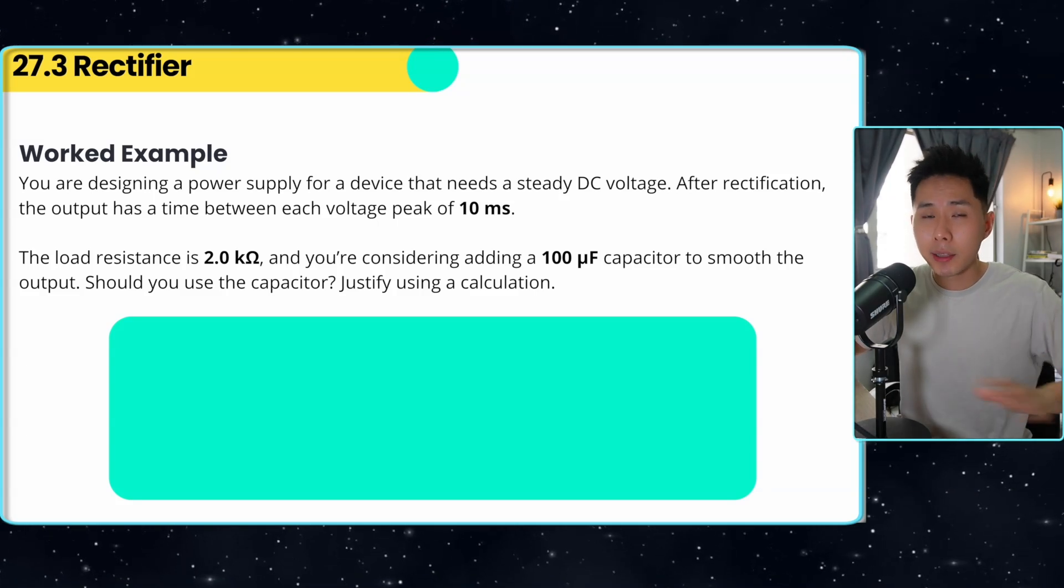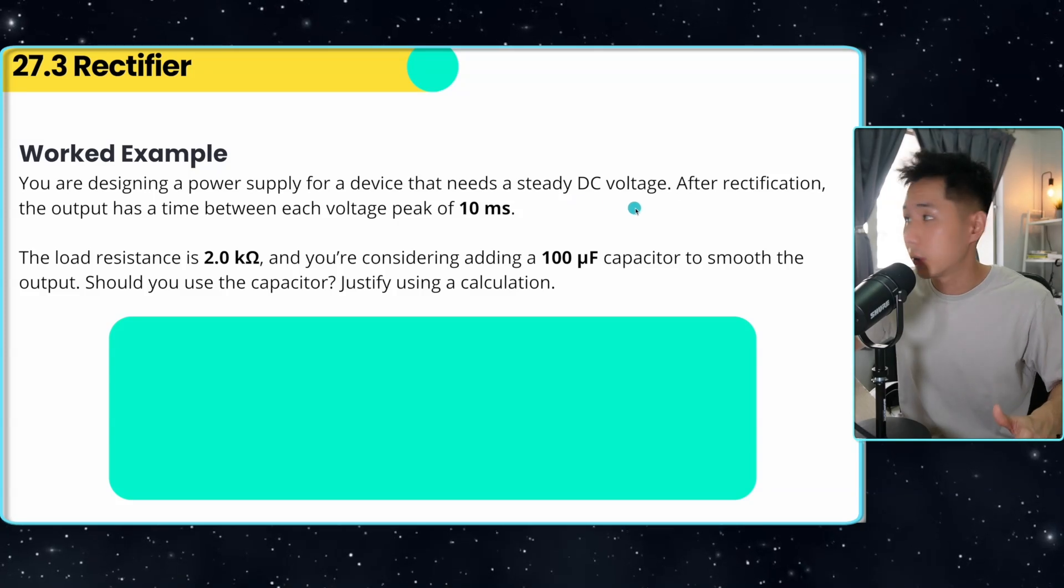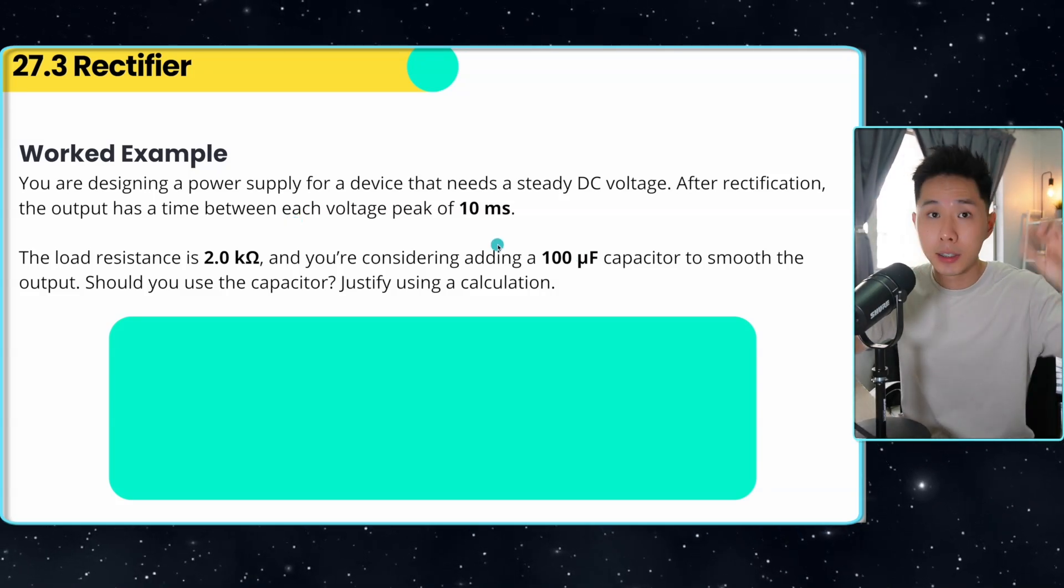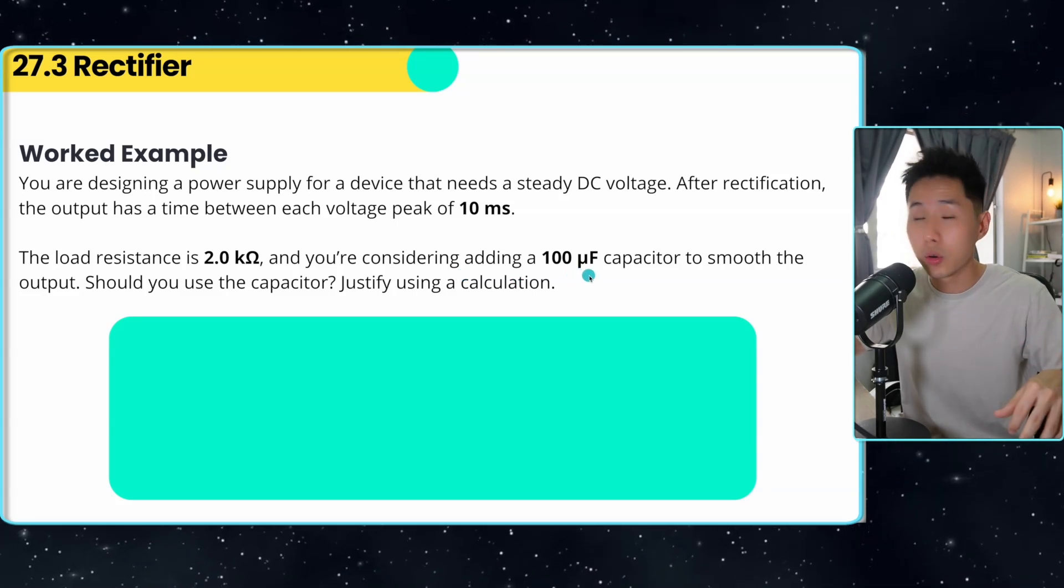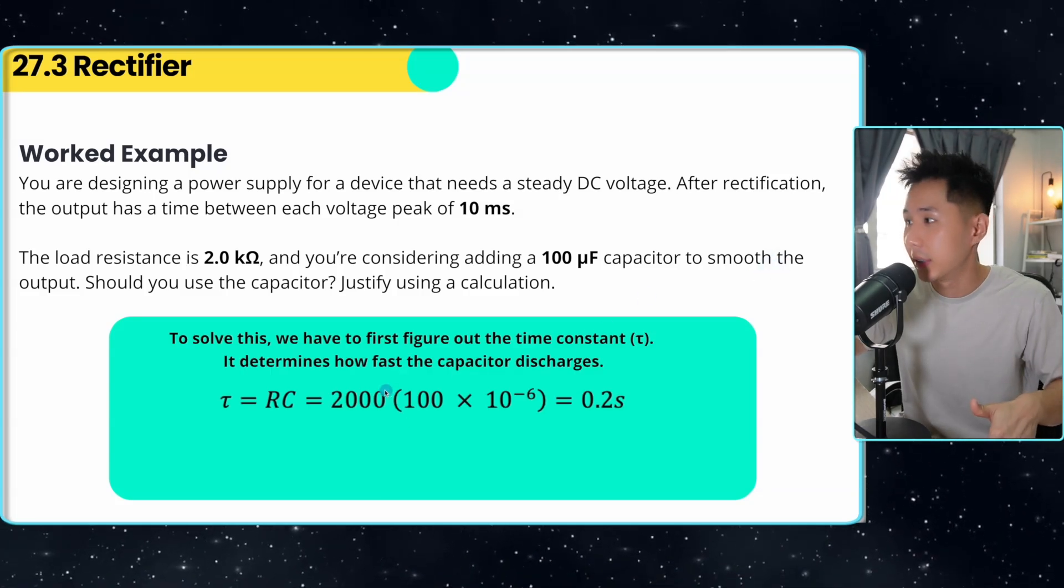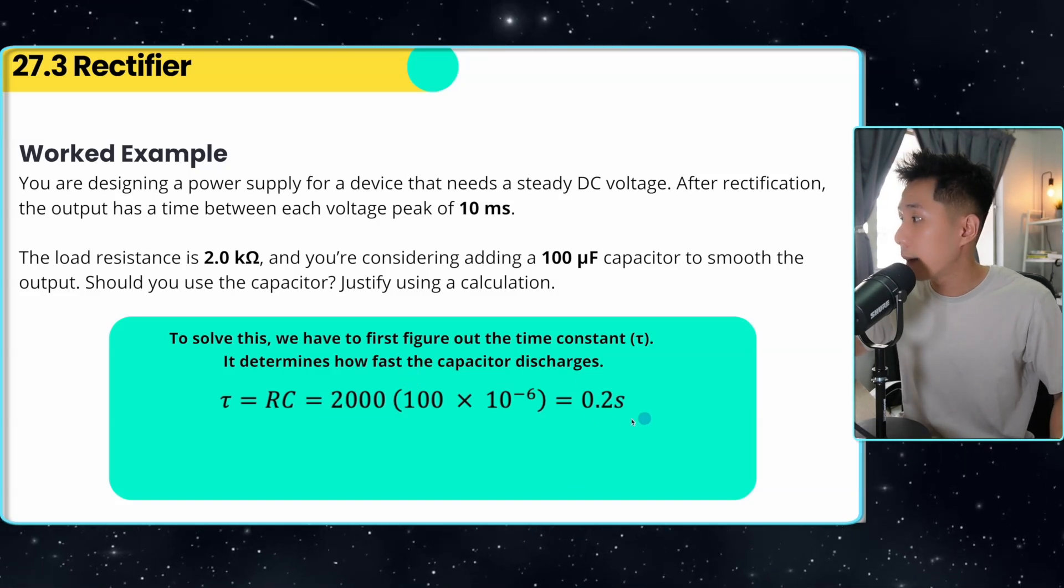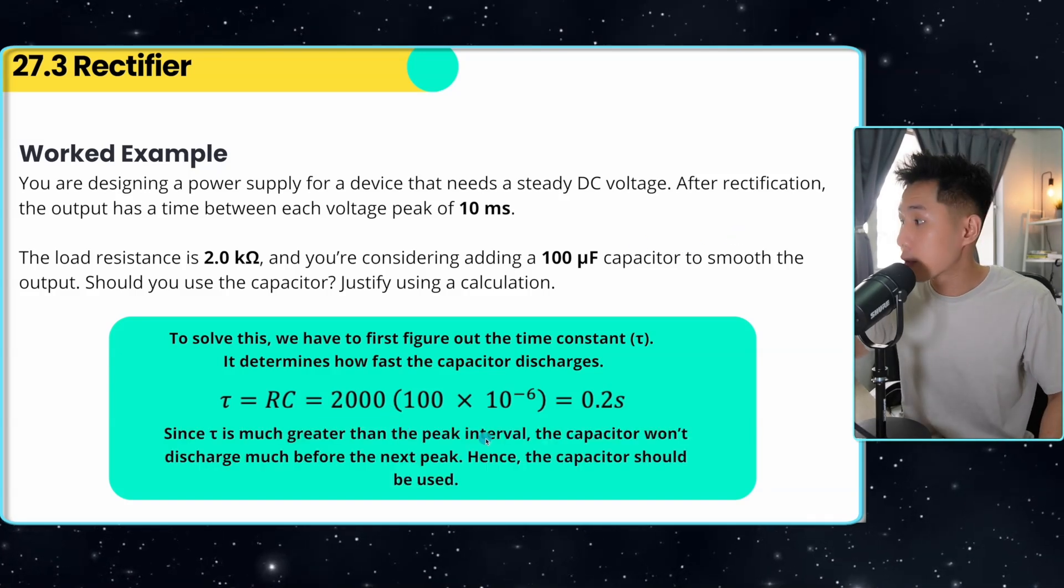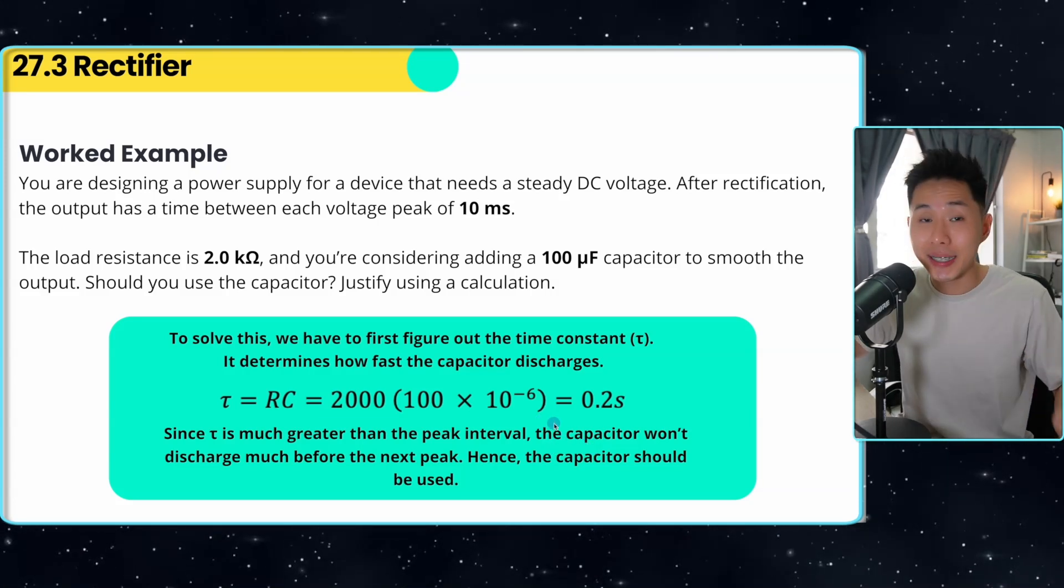I know it's pretty abstract. So I have a worked example to help everyone understand it. Say I have this scenario here, this power supply needs a steady DC voltage. And after rectification, the time between each peak voltage is 10 millisecond. Say your resistance is 2kΩ, and your capacitor is 100 μF. So should you use the capacitor? To understand this question, you have to first figure out what is the time constant. The time constant tells you how fast the capacitor discharges. So after calculation, I figured out that the time constant is 0.2 second, and the time between the voltage peak is 10 millisecond. And because the time constant is much greater than the peak interval, the capacitor won't discharge much before the next peak. And hence, the capacitor should be used.